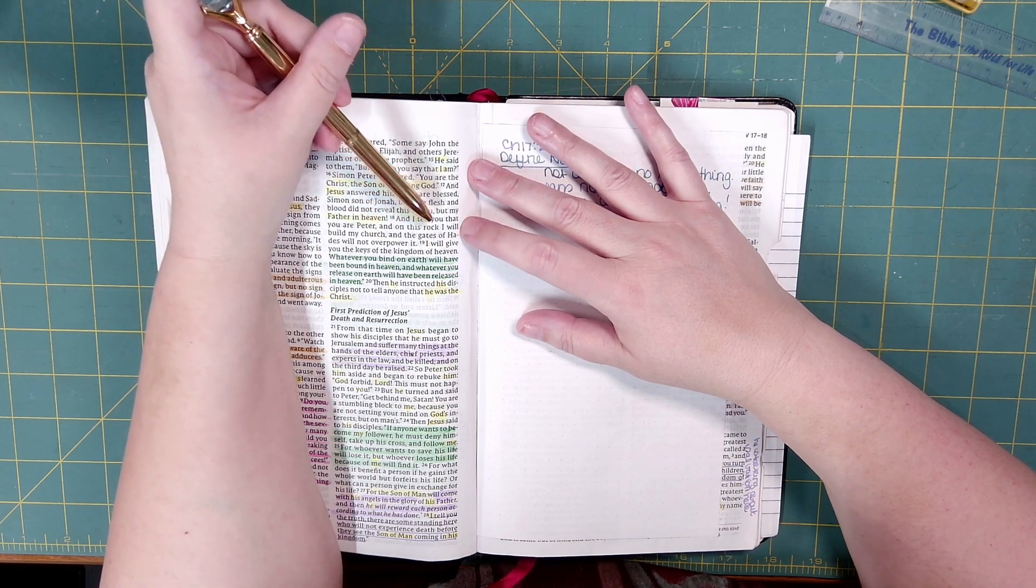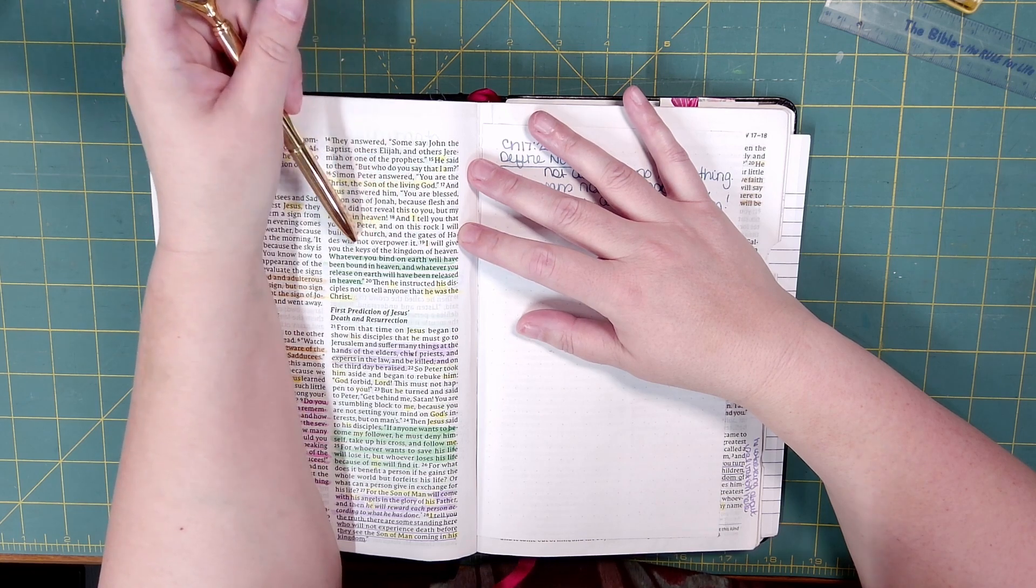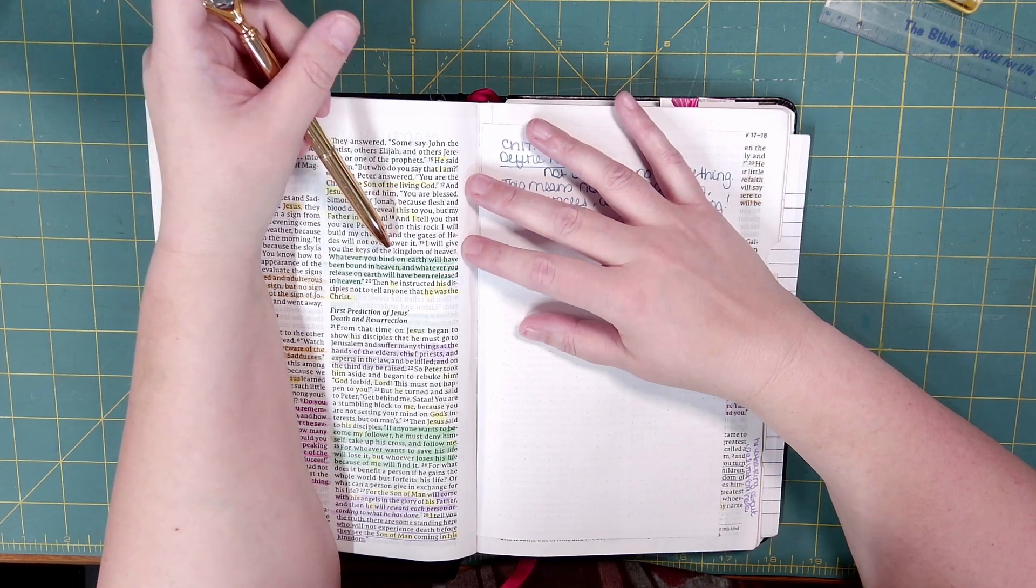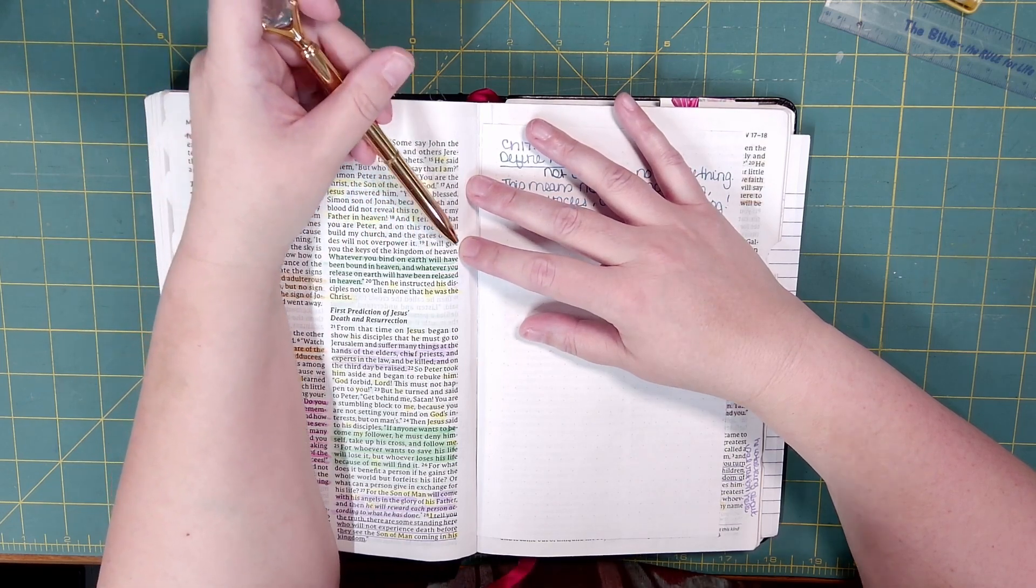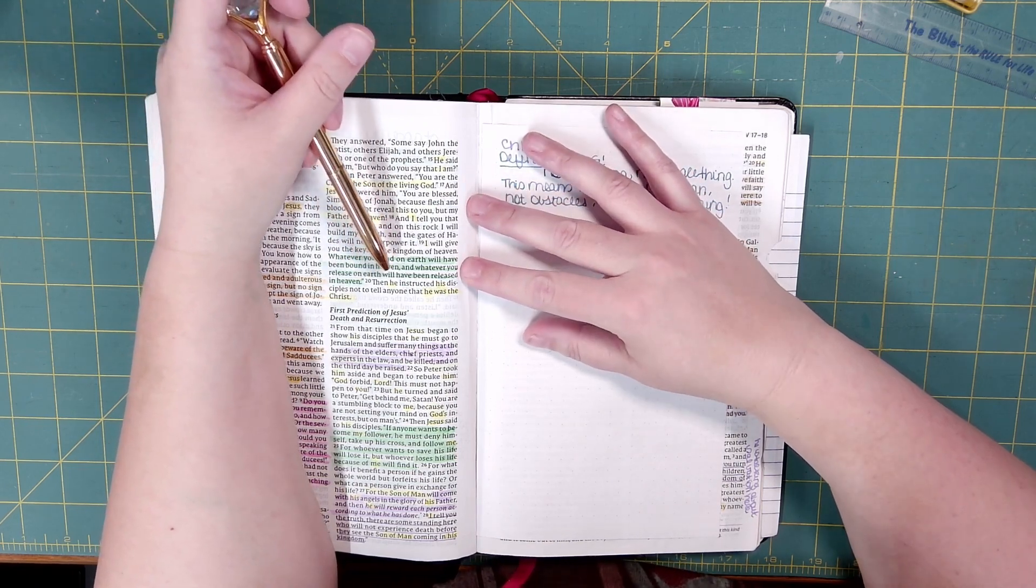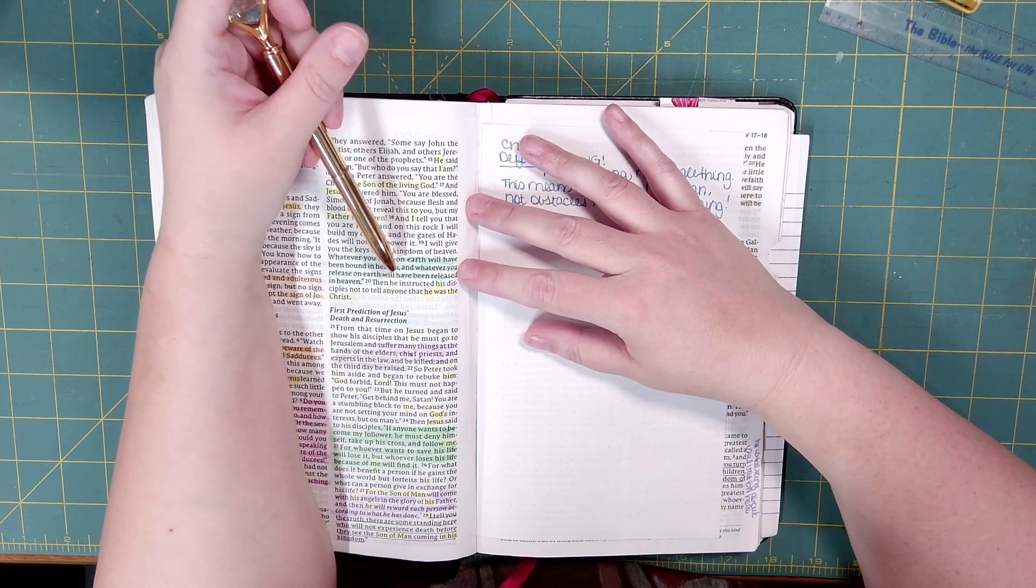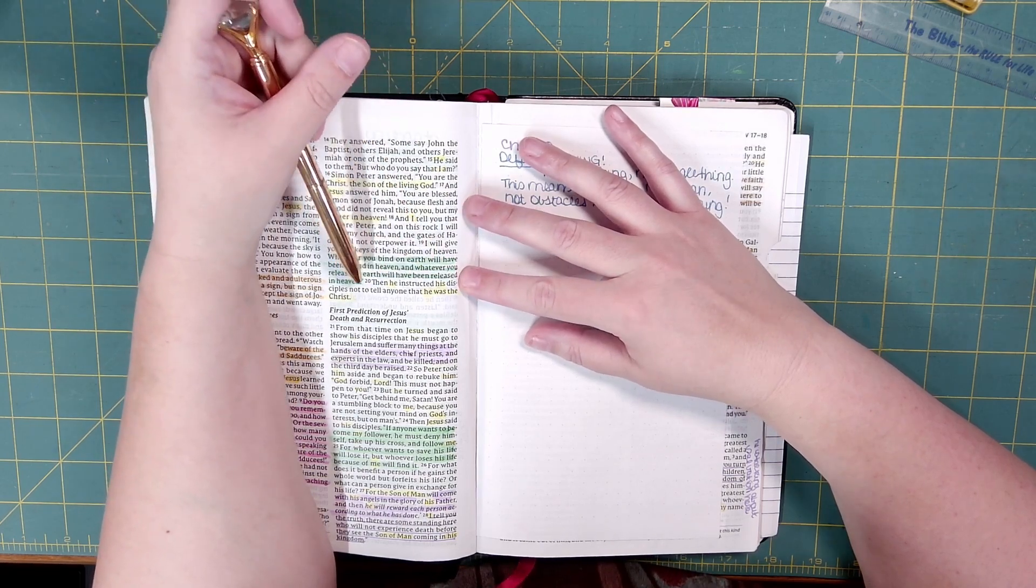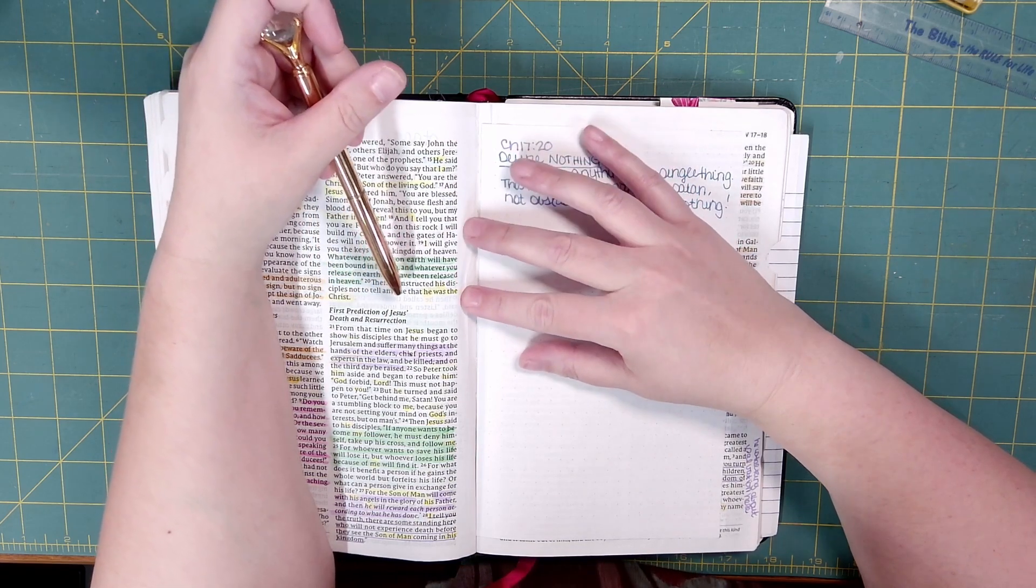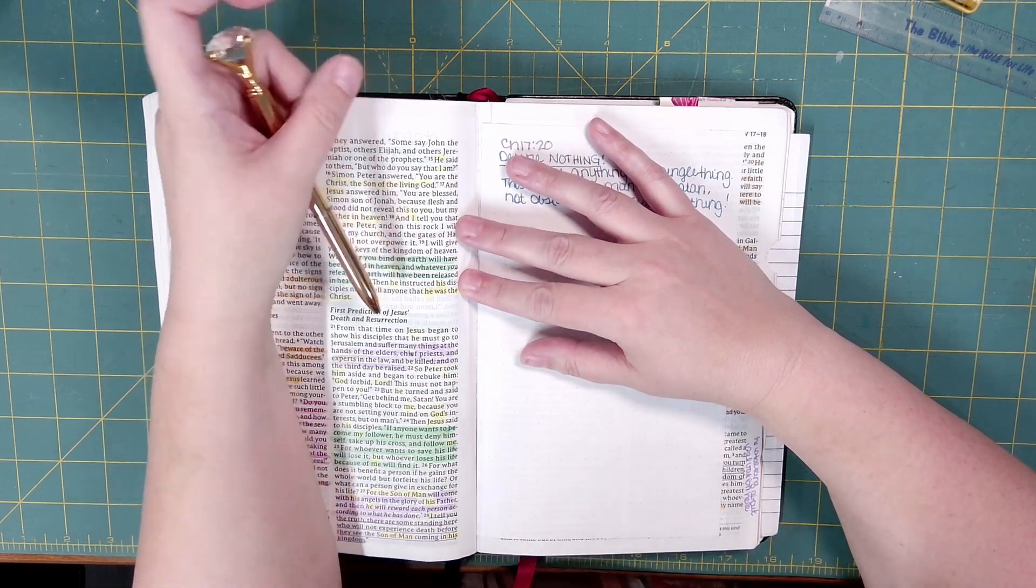And I tell you that you are Peter, and on this rock I will build my church, and the gates of Hades will not overpower it. I will give you the keys of the kingdom of heaven. Whatever you bind on earth will have been bound in heaven, and whatever you release on earth will have been released in heaven. Then he instructed his disciples not to tell anyone that he was the Christ.